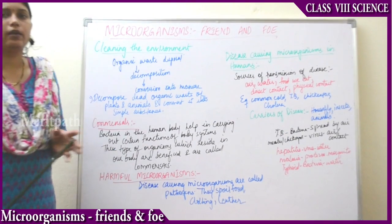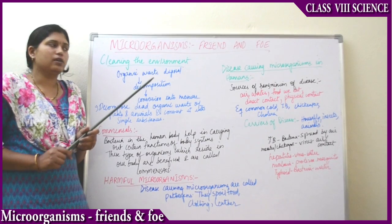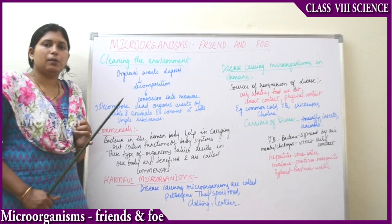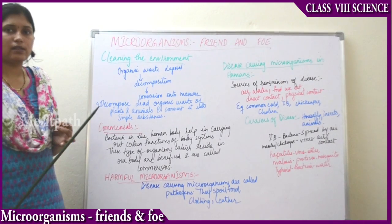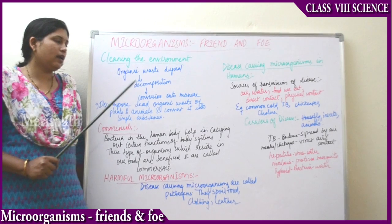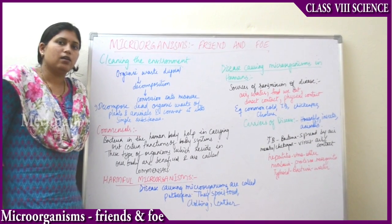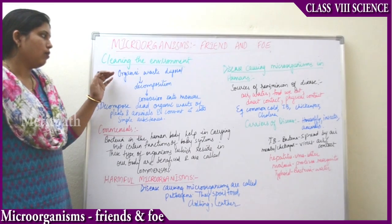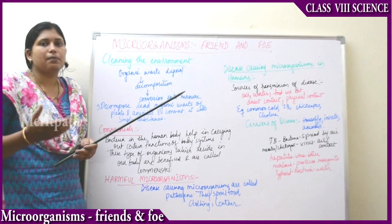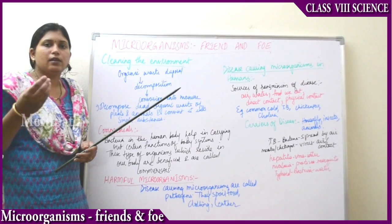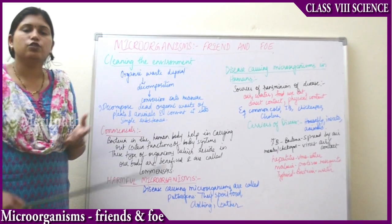How do useful microorganisms help us in cleaning the environment? We dispose waste in the garbage around us. That is organic waste — organic waste includes vegetable peels, fruit peels, as well as dried leaves and dried stems of plants. When we dispose of this in the garbage, they decompose. After some days, they no longer exist — they break down into small substances and get mixed up with the environment. That is decomposition, and it occurs with the help of useful microorganisms.